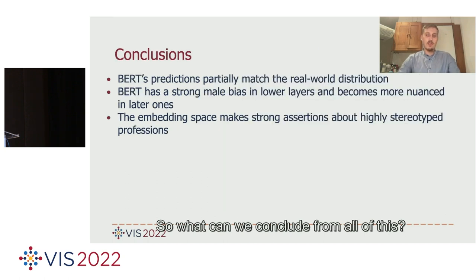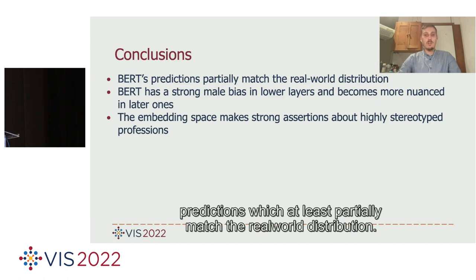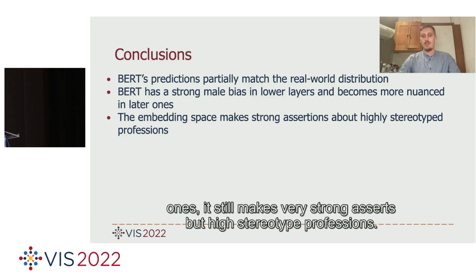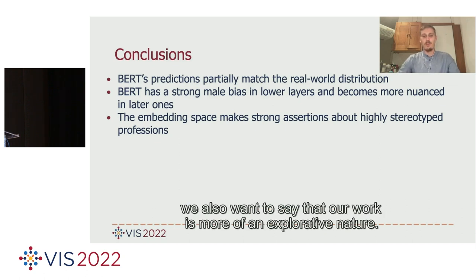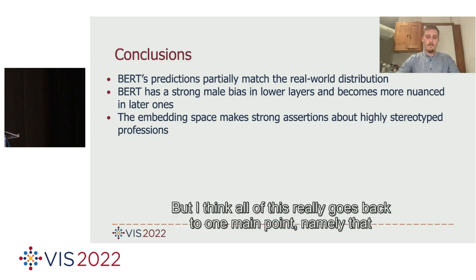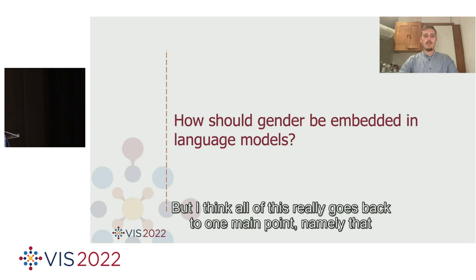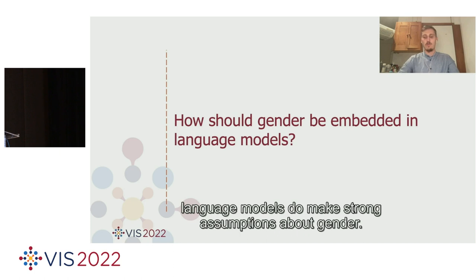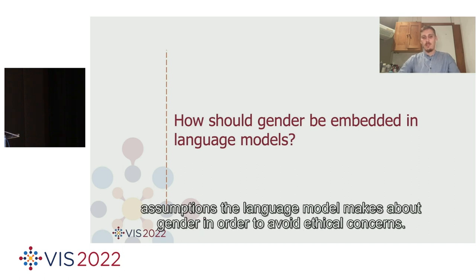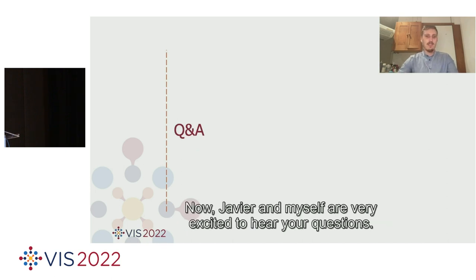What can we conclude? BERT makes predictions that at least partially match the real-world distribution. BERT has a very strong male bias in lower layers and becomes more nuanced in later ones, though it still makes strong assertions about highly stereotyped professions. Our work is more exploratory in nature, so we encourage you to play around with our dashboard. The main point is that language models make strong assumptions about gender — so if you use language models in safety-critical applications, you need to understand what assumptions they make about gender in order to avoid ethical concerns. Thank you very much.